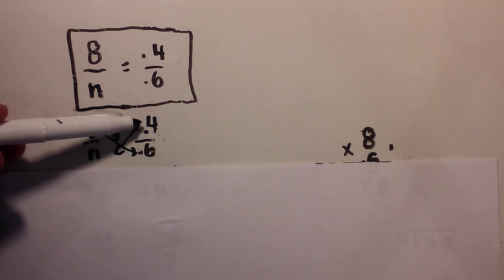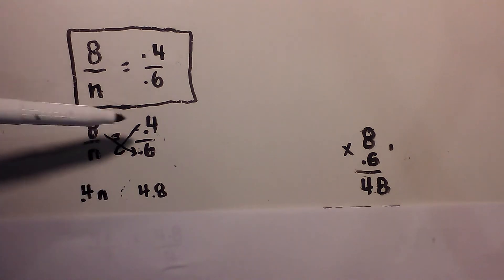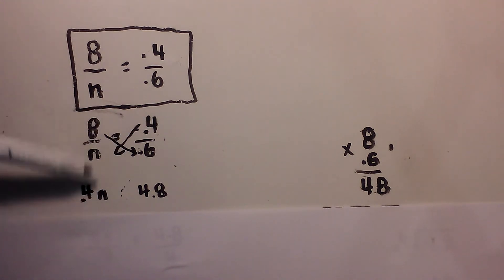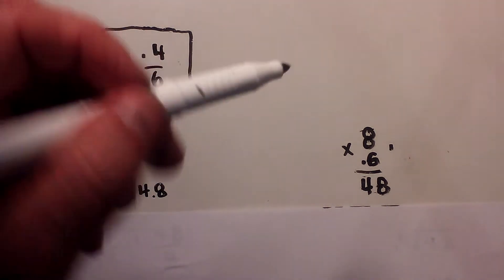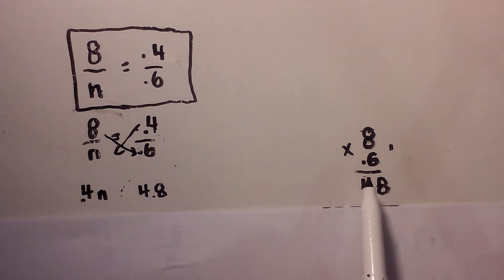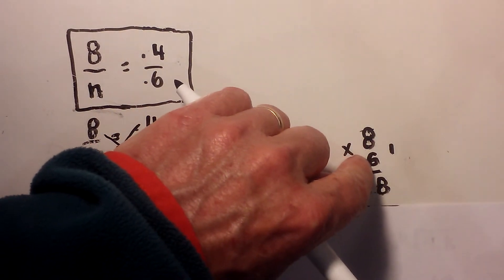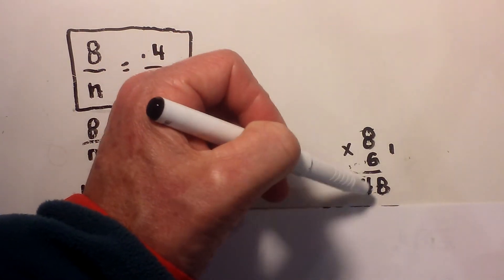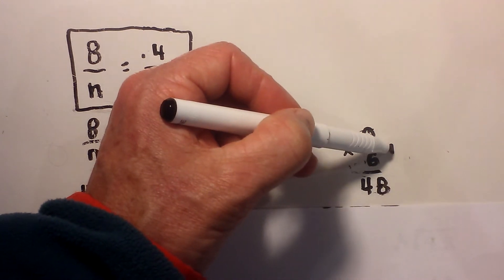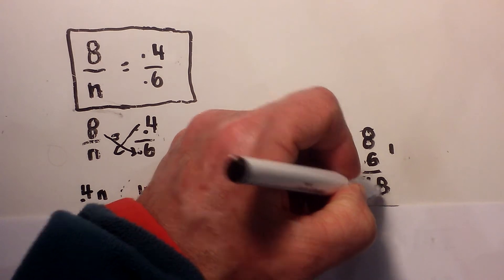8 times 0.6, 0.4 times n. So 0.4 times n is 0.4n, and 8 times 0.6 is 4.8. Now whenever you multiply with a decimal you count how many numbers are to the right of the decimal, and in this case we have one. 8 times 6 is 48, but remember I need one number to the right of the decimal so I will put 4.8.